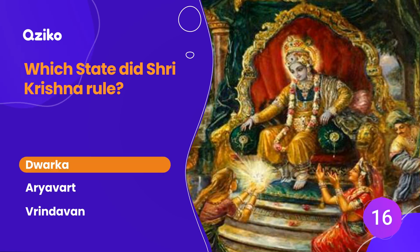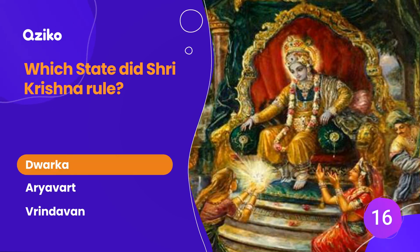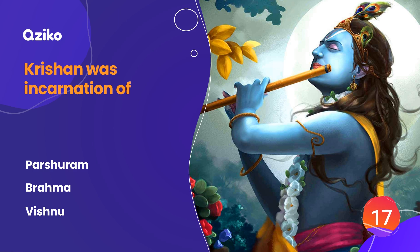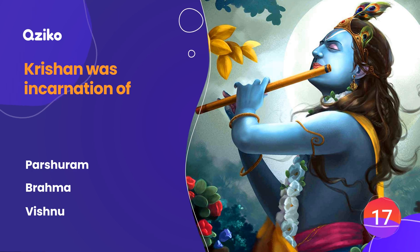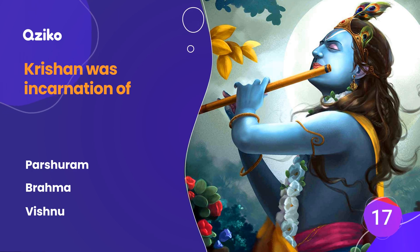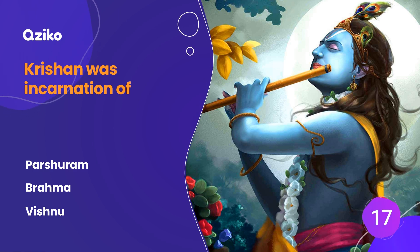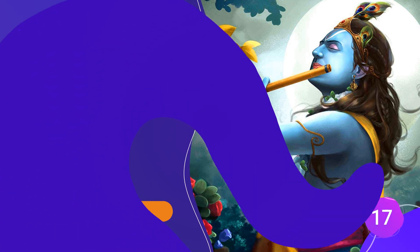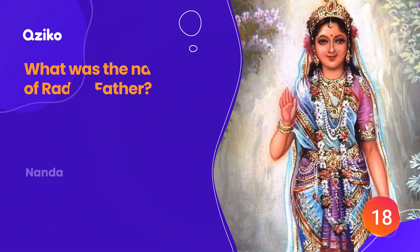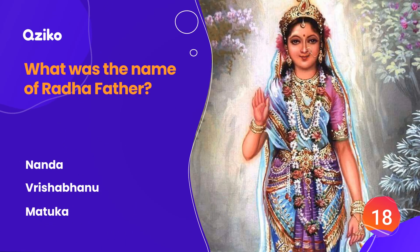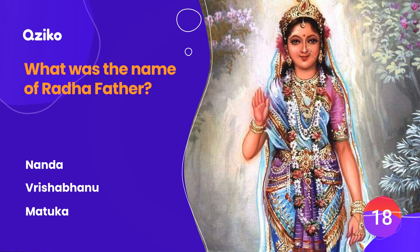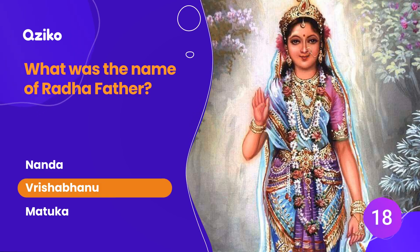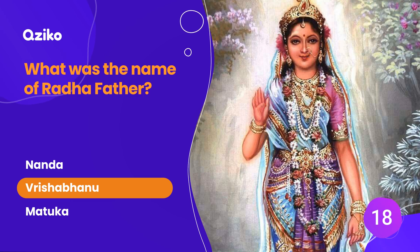The right answer is Dwarka. Krishna was an incarnation of? The right answer is Vishnu. What was the name of Radha's father? The right answer is Vrishbhanu.